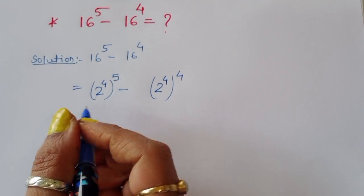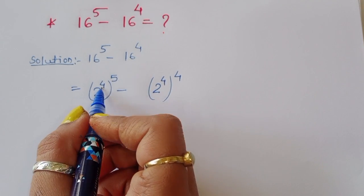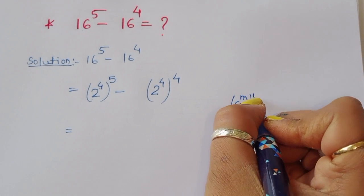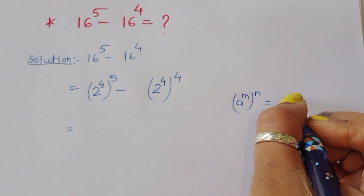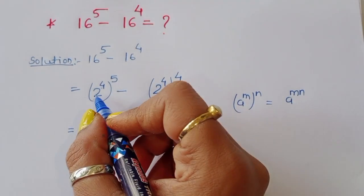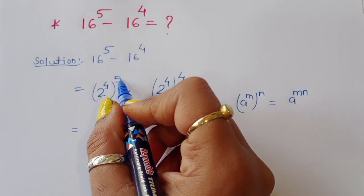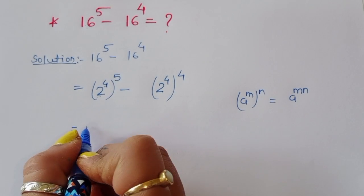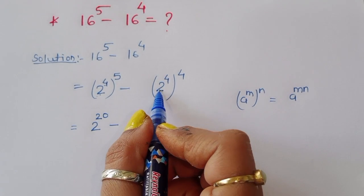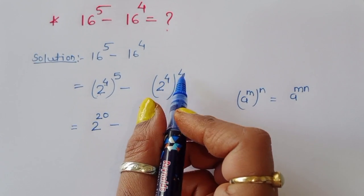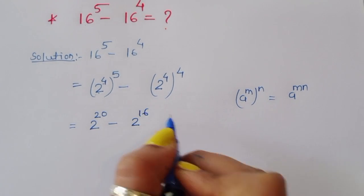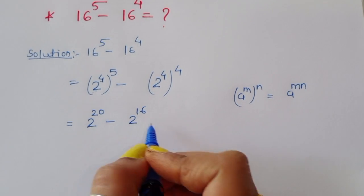Now we can simplify 2 power 4 power 5. We know the formula: a power m power n is equal to a power mn. Using this formula, 4 times 5 is 20, so we get 2 power 20. And 4 times 4 is 16, so we get 2 power 20 minus 2 power 16.